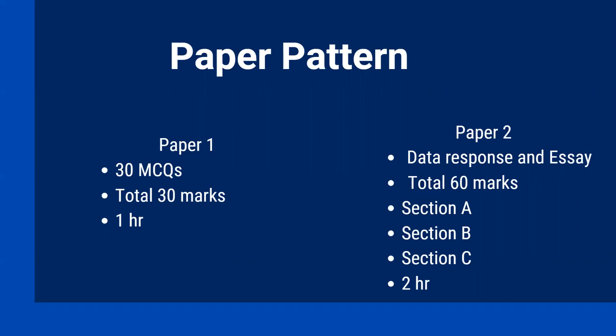Paper 2 has data response worth 20 marks which comes in parts with different mark allocations. Data response is a compulsory part of this paper with no choice. The total paper is 60 marks. Section A is the case study data response. Section B has two questions of 20 marks each - you have to do one question which has two parts: A for 8 marks and B for 12 marks. Section C is the same: there are two questions, you do one question, and there are two parts of each question: 8 marks and 12 marks.